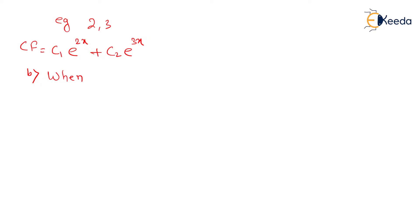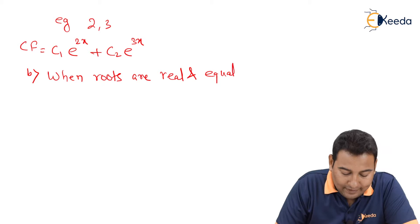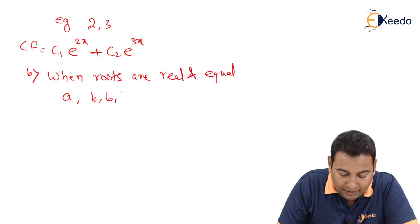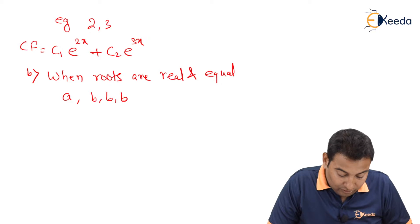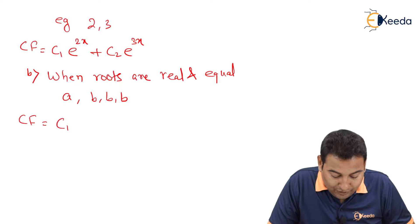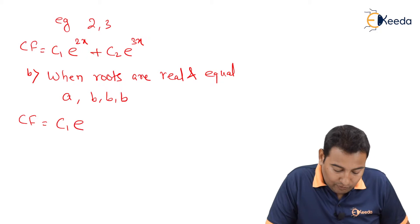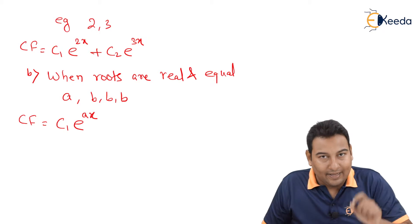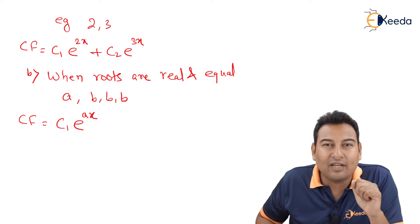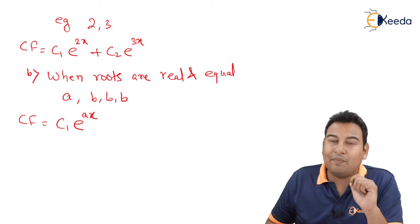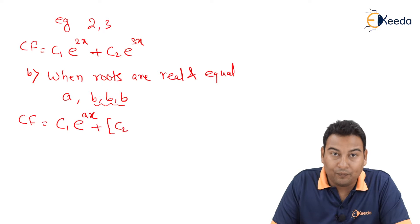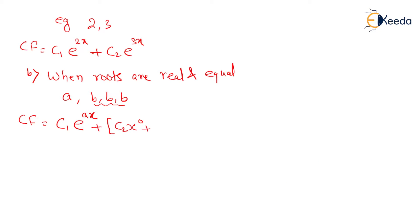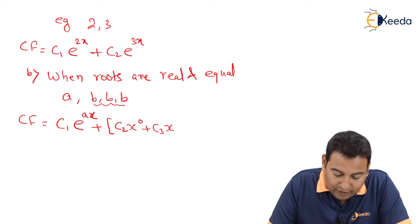The second case is when the roots are real and equal. For example, suppose the roots are a, b, b, b — here a is not repeated but b is repeated three times. For the non-repeated root a, it is written as c1·e^(ax). For the repeated root b, you write: c2·x^0 + c3·x^1 + c4·x^2, all multiplied by e^(bx). The power of x increases with each repetition.